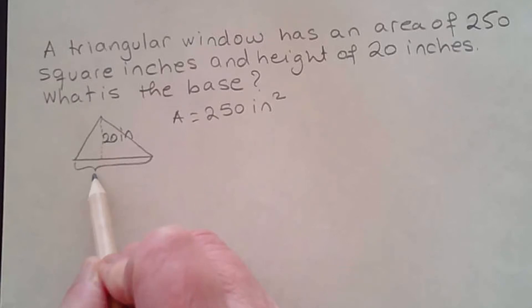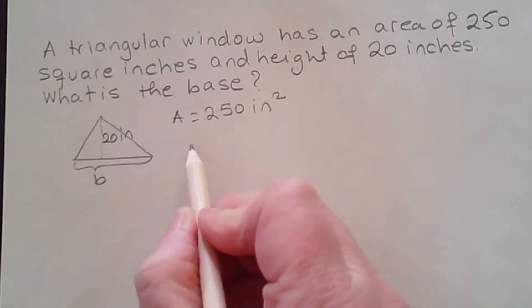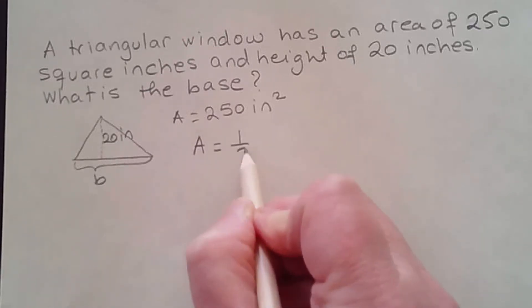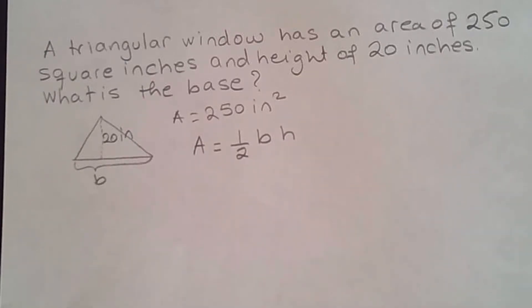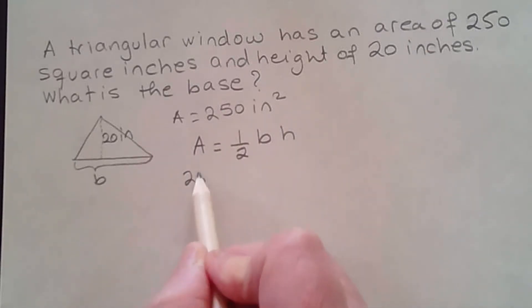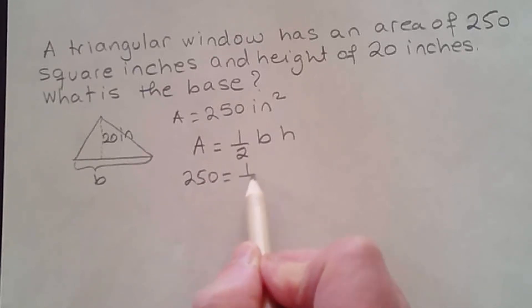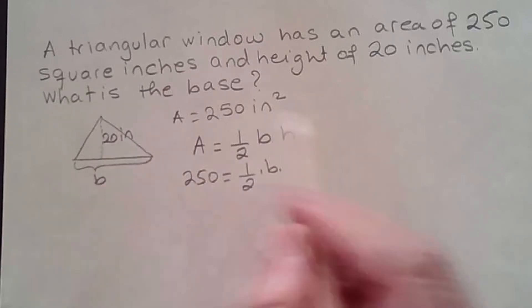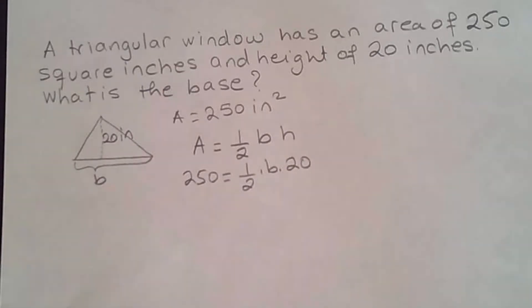The base I'm going to call b. If you recall, the formula for the area of a triangle is one-half base times height, so I'll be using this formula to answer the question — that is to find the base of the triangular window. I already have the area, and that is 250 square inches, equal to one-half times base times the height, which is 20 inches.